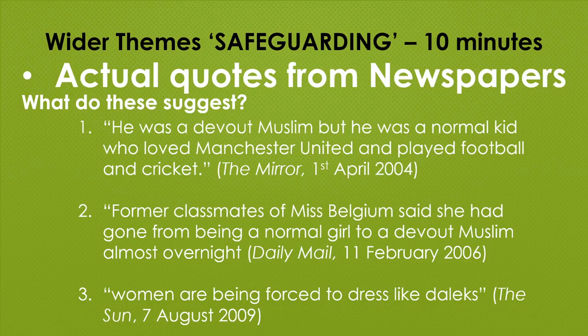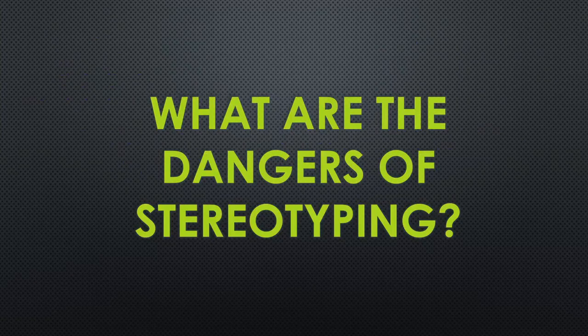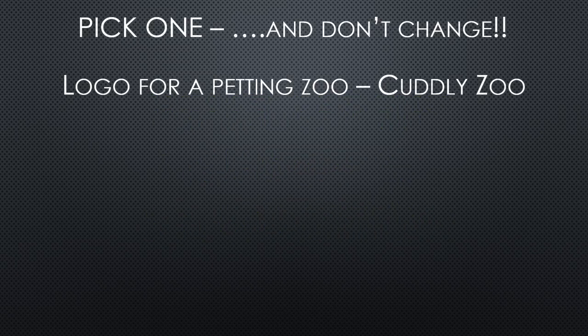What they're trying to say is that Muslim is opposed to being 'normal.' In the first quote: 'he was a devout Muslim but he was a normal kid' — why is that not normal? The word 'normal' is being used repeatedly, and 'women are being forced to dress like Daleks' is an absolutely disgusting line that cannot be justified. You should be able to find at least three or four dangers of stereotyping to add to your document. Once finished, please forward it to me through the chat function.